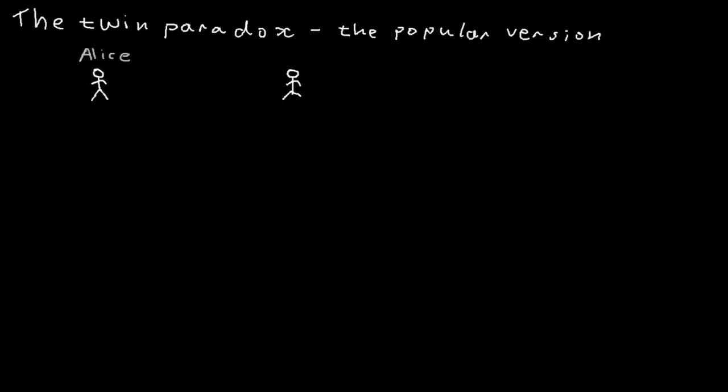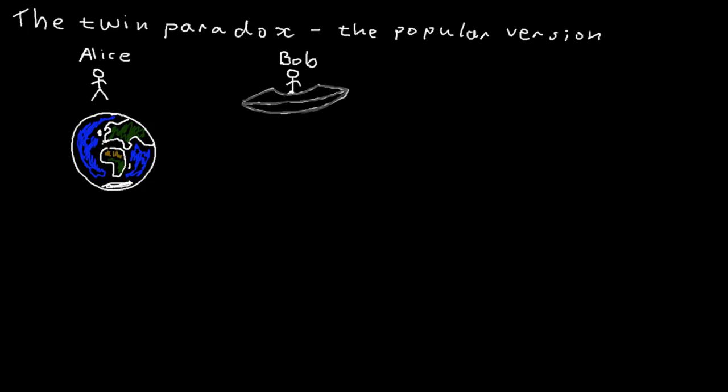There are twins. Let's call one of them Alice. Alice stays at home on the Earth. The other one is Bob. Bob hops into a flying saucer and travels at speed v, close to the speed of light c, in the direction of Proxima Centauri b, which is approximately four light years from Earth.